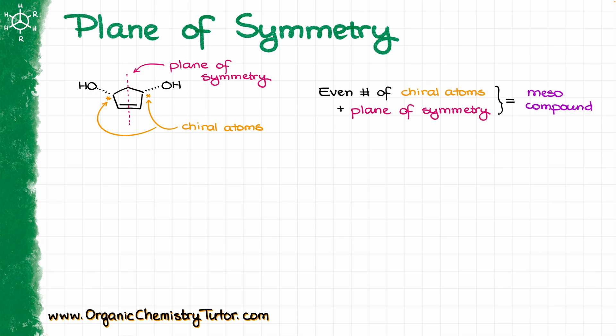Here is something interesting. A common feature of many meso compounds is a plane of symmetry. If your molecule has an even number of chiral atoms and it has a plane of symmetry cutting your molecule through the middle of it, you are looking at a meso compound. Like, for instance, in this example: